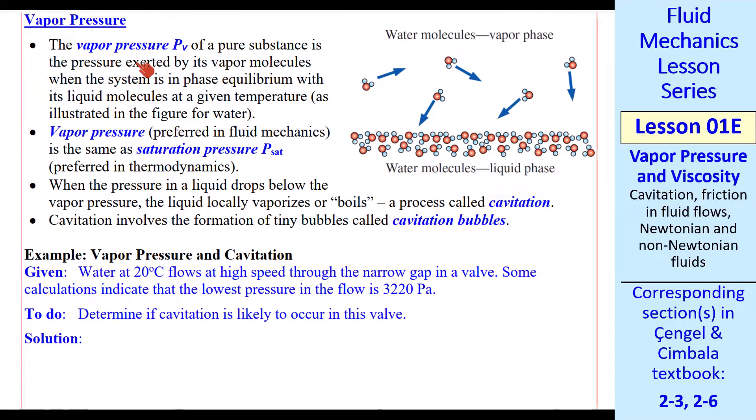What is vapor pressure? Here's a formal definition. We're talking about a pure substance. It's the pressure exerted by its vapor molecules when the system is in phase equilibrium with its liquid molecules at a given temperature. Here's an illustration for water. Some molecules evaporate and others come back into the water. They're in equilibrium when the same amount goes out as comes in.